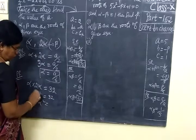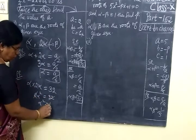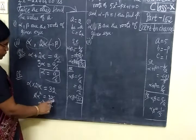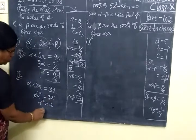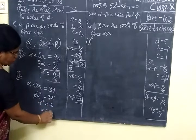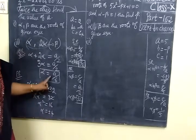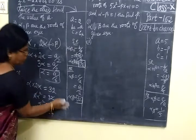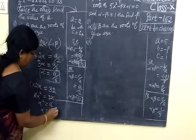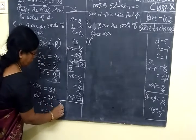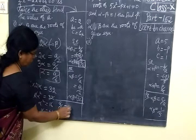So alpha squared equal to, if you cancel, you are getting 16. You are canceling this. So alpha equal to plus or minus 4. The alpha value, we will have to substitute.